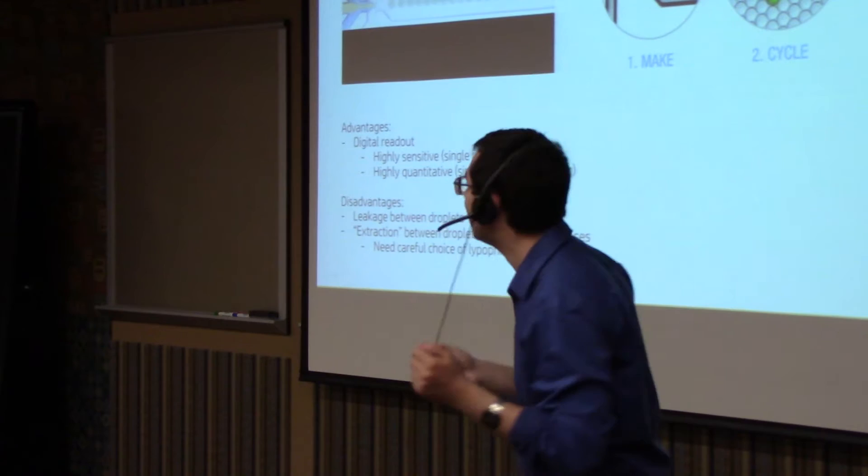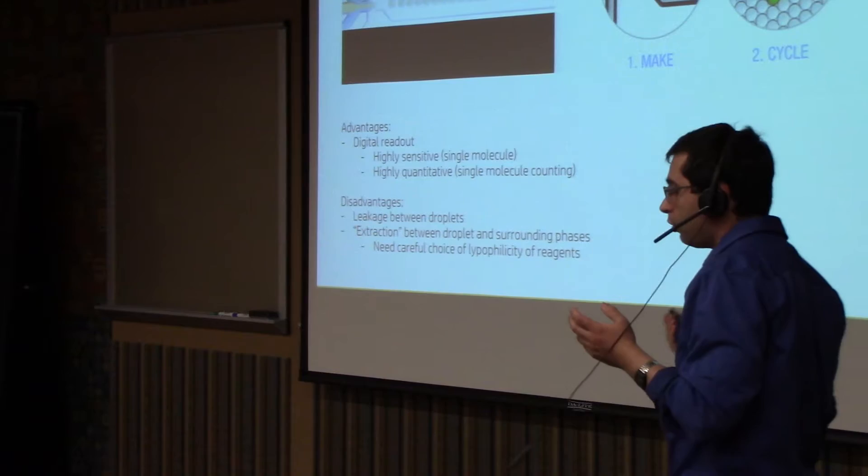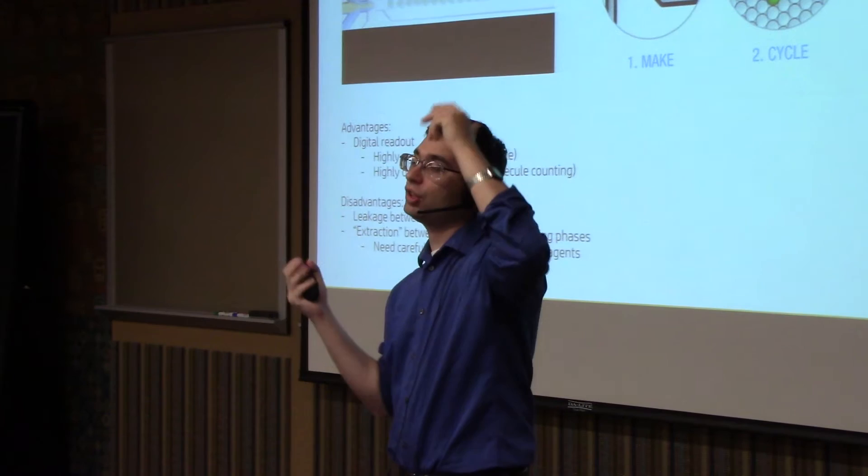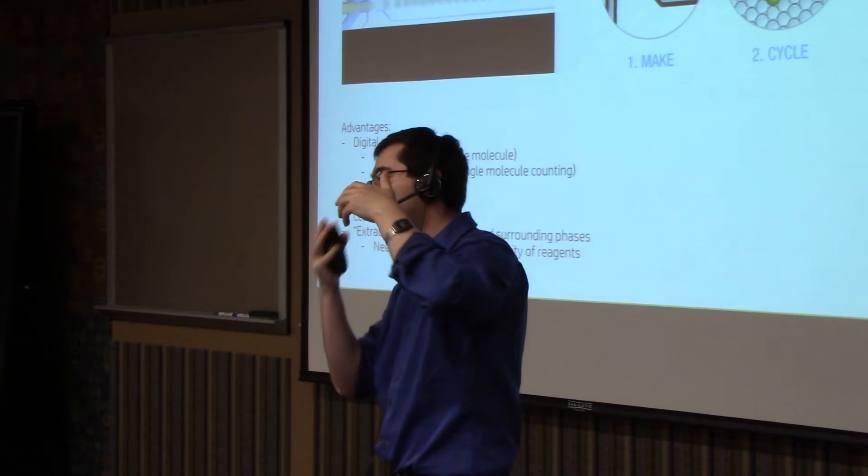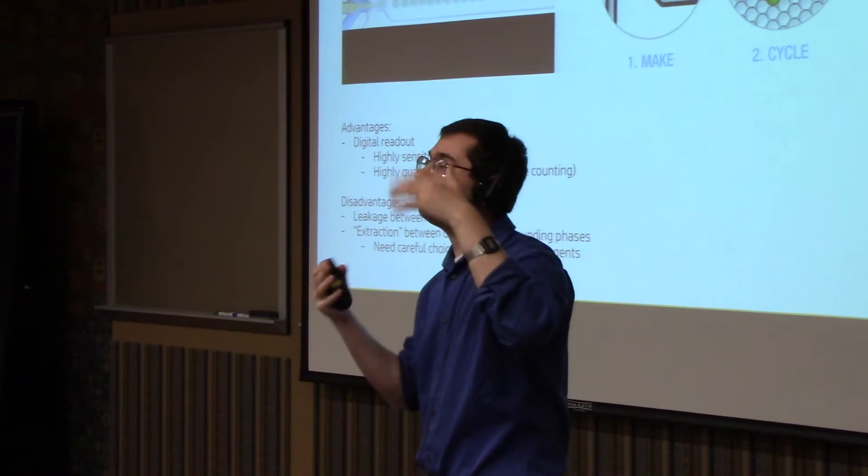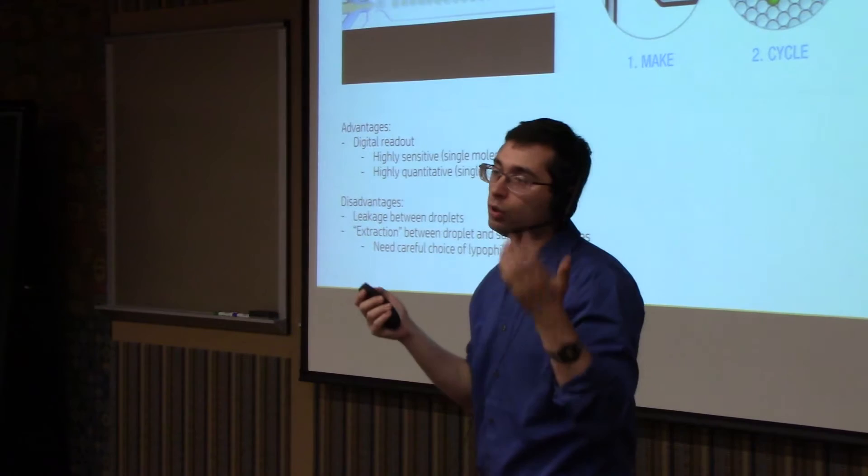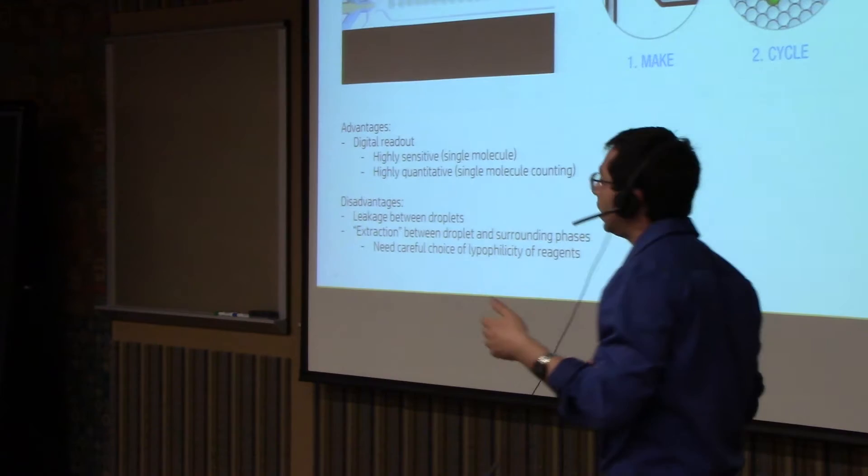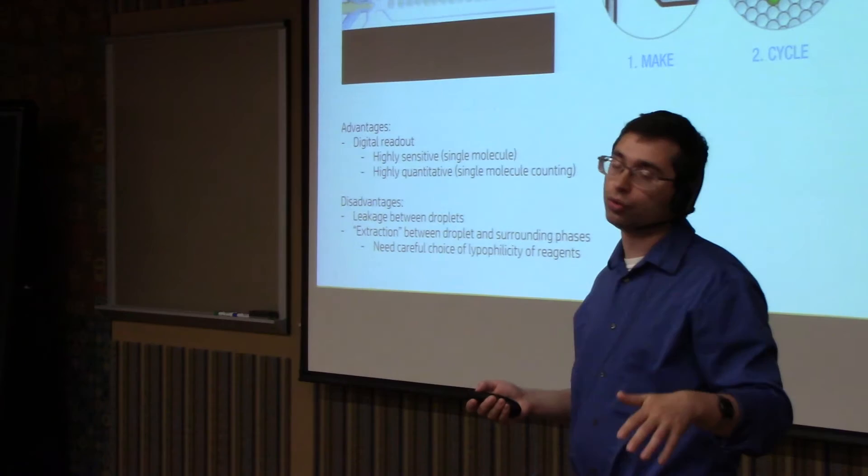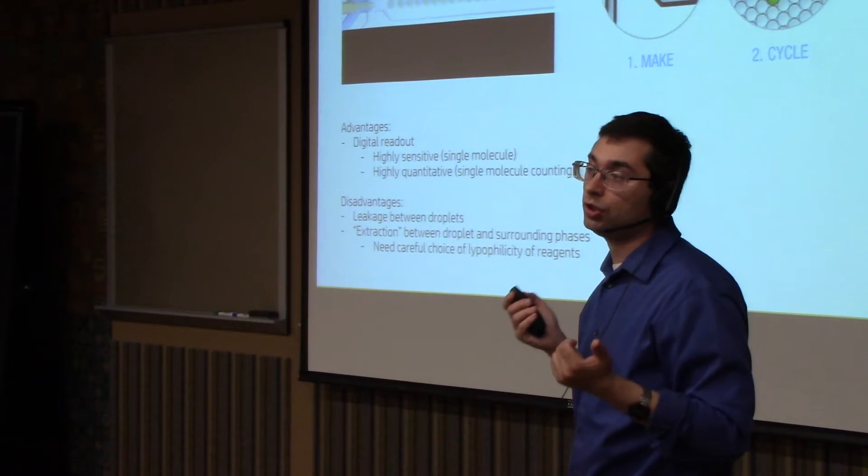And so what happens though, what I described is a fairly ideal case where they duplicate and everything is nice. In the real world, this duplication is sometimes not as efficient. So instead of, like when you go for example from four to eight, you might actually get eight. You might get six for example. Something went wrong. One of the duplications didn't work. And so if you were trying to quantify how much you started initially, you can't just extrapolate logarithmically and say, oh I have this many because now I have this many, because sometimes these efficiencies do not work. There is an interesting trick around this.